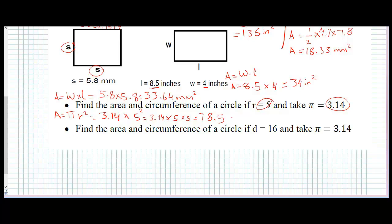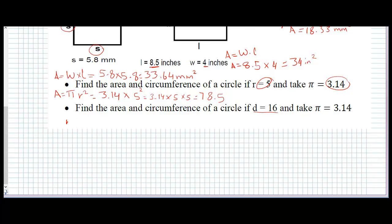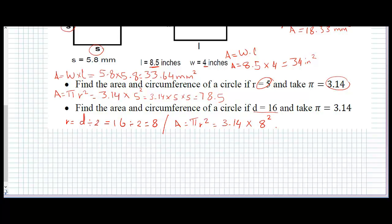There are no units given here. Next: find the area of a circle if the diameter D equals 16. Since it's diameter, not radius, we first find the radius: radius equals D divided by 2, so 16 divided by 2 equals 8. Then area equals pi r squared, which is 3.14 times 8 squared, equals 200.96 units squared.